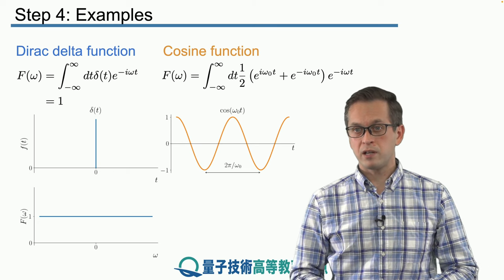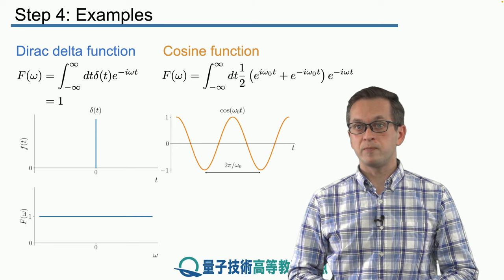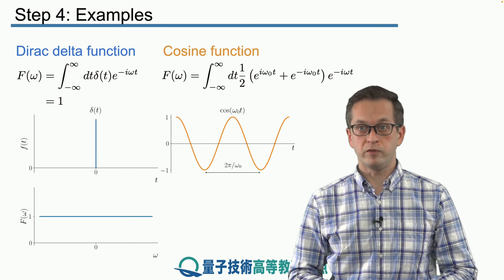And here I'm not assuming anything about the periodicity of the function. And even though we could have just taken the Fourier series because it's a periodic function, let's see how it works with the Fourier transform, the forward Fourier transform.